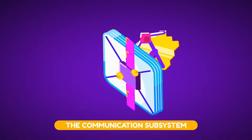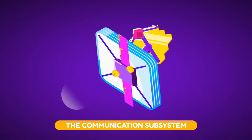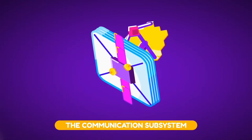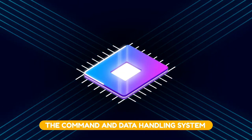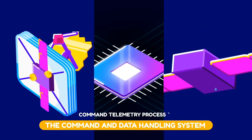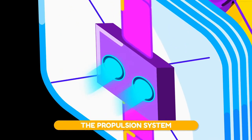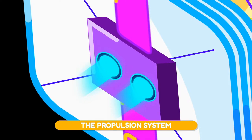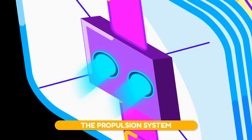The communication subsystem is the ears and mouth of the observatory. It receives instructions from the operations control center and sends status and scientific data back to the same. The command and data handling system is the brain of the spacecraft bus — it has a computer and a command telemetry processor that takes commands from the communication system and directs them to the appropriate recipient. The propulsion subsystem contains the fuel tanks and rockets that are fired to maintain orbit when directed by the attitude control system.